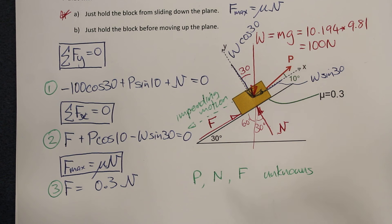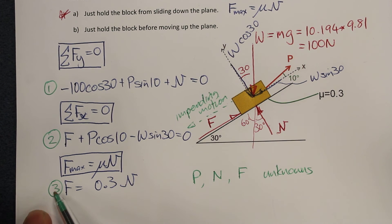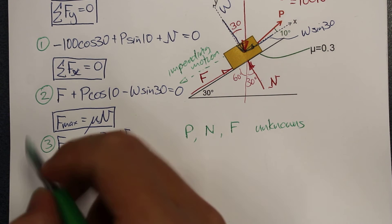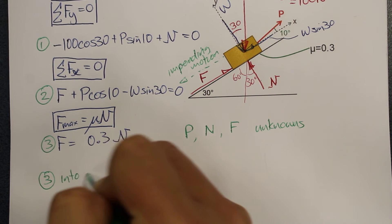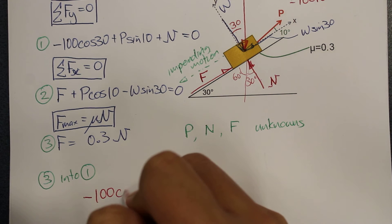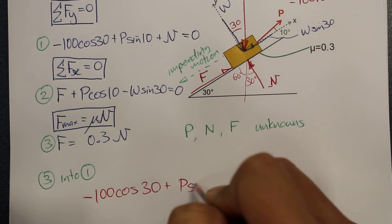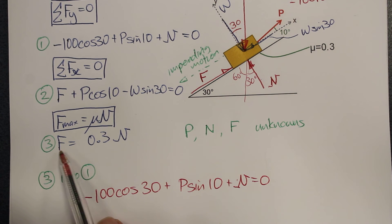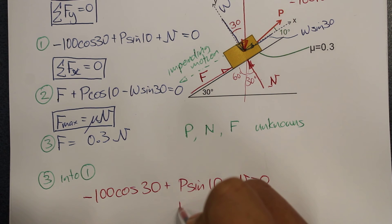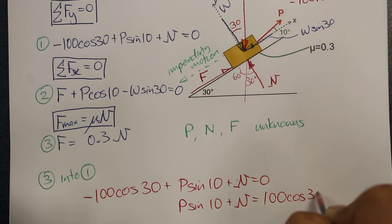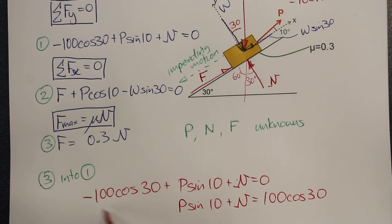So what we'll do now is solve this set of equations. We rearrange equation 1: P sine 10 plus N equals 100 cosine 30. That is equation 1 rearranged — we didn't actually need to substitute equation 3 into equation 1, just a rearrangement.